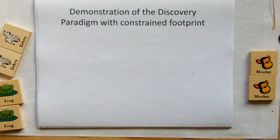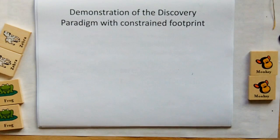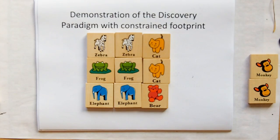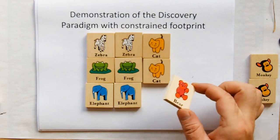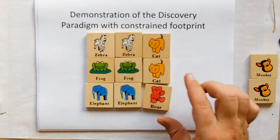Let me demonstrate the discovery paradigm again when we constrain it with the footprint paradigm. I've chosen a subset of the matchimals. The reason for the subset is to demonstrate that we do not have access to all the pieces — there are things in the universe we do not as yet know, and this represents that.